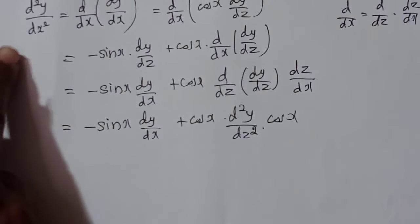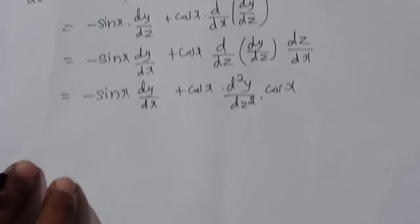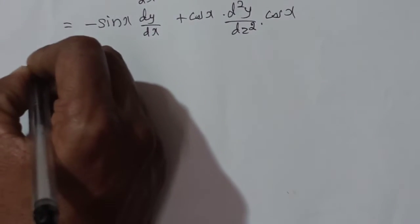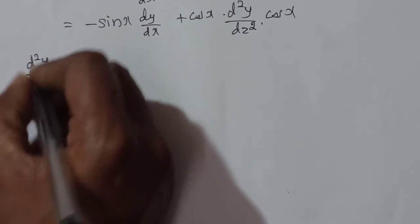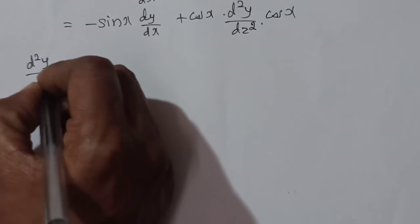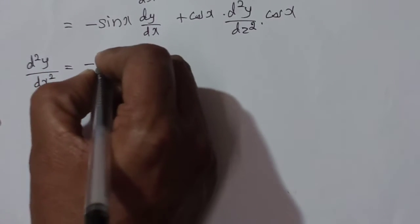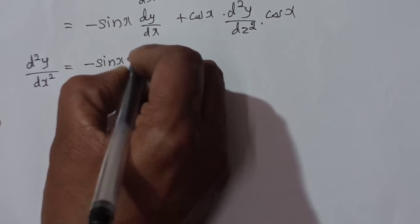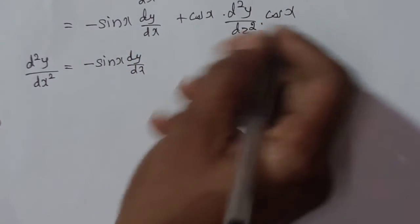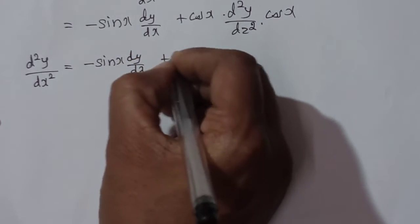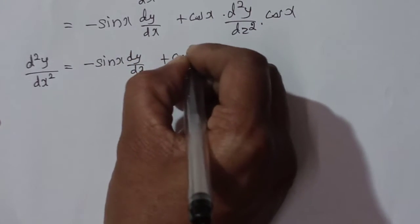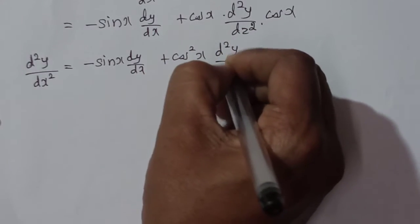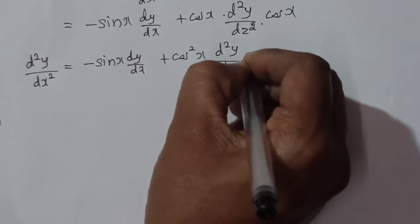Therefore d²y/dx² = −sin x · dy/dx + cos²x · d²y/dz². We now have expressions for both dy/dx and d²y/dx² in terms of z, ready to substitute into the original equation.